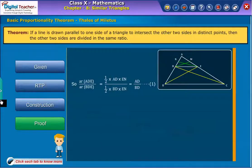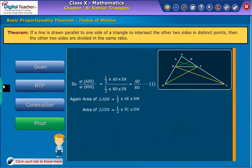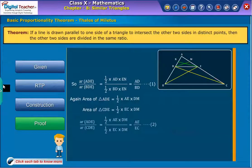We also observe that area of triangle ADE is equal to 1/2 × AE × DM and area of triangle CDE is equal to 1/2 × EC × DM. Now, again dividing area of triangle ADE with area of triangle CDE, we get equation 2.